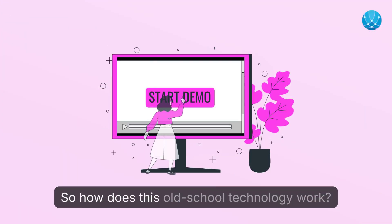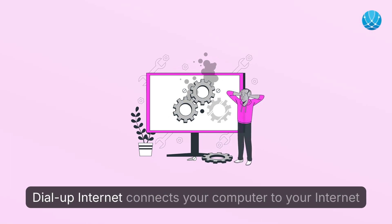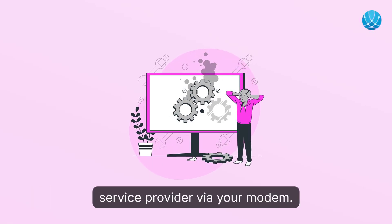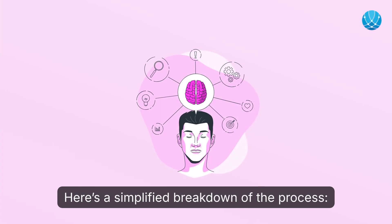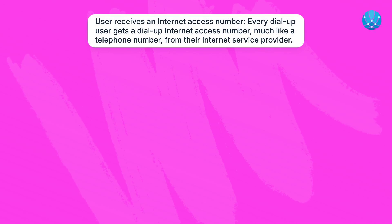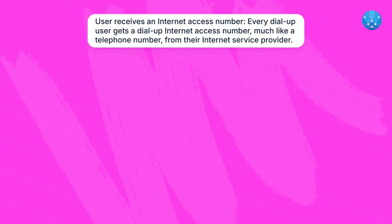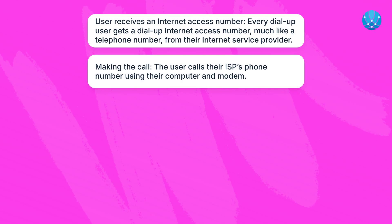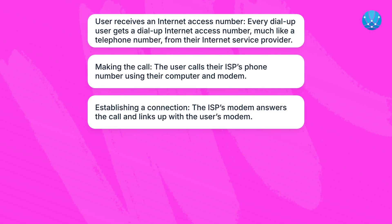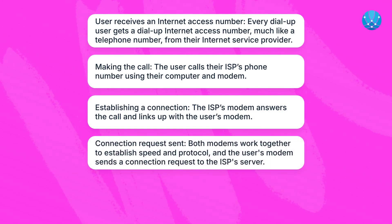So how does this old-school technology work? Dial-up internet connects your computer to your internet service provider via your modem. Here's a simplified breakdown of the process: Every dial-up user gets a dial-up internet access number, much like a telephone number, from their ISP. The user then calls their ISP's phone number using their computer and modem. The ISP's modem answers the call and links up with the user's modem.